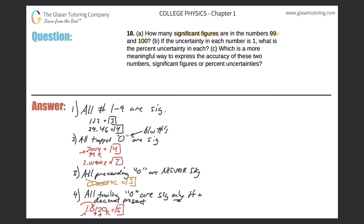Contrast that with the number 1,010 written without a decimal. The first one is significant, the second one is significant, and the two zeros between them are trapped, so also significant. But the last trailing zero has no decimal present, therefore it's not significant. So this number has four significant figures. Those are the four rules of significant figures.